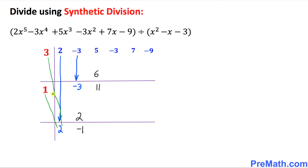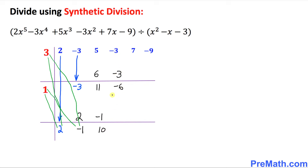We're going to repeat the same process. Let's multiply 1 with this next number, negative 1 — 1 times negative 1 is going to be negative 1. Likewise, this 3 is going to get multiplied by negative 1 — 3 times negative 1 is going to be negative 3. Let's add these numbers again: 11 and minus 1 is going to make 10, and negative 3 and negative 3 makes negative 6.